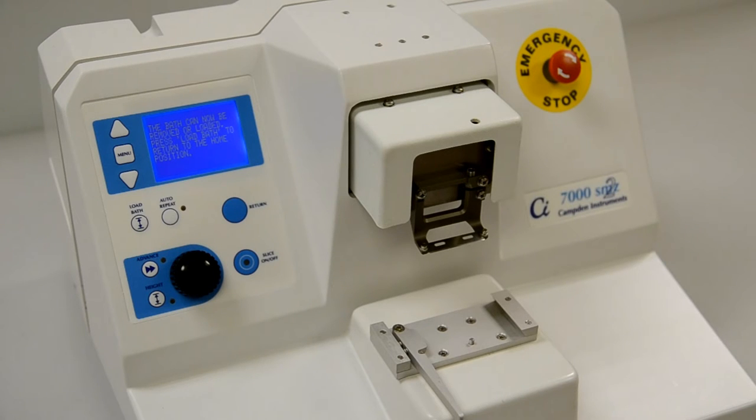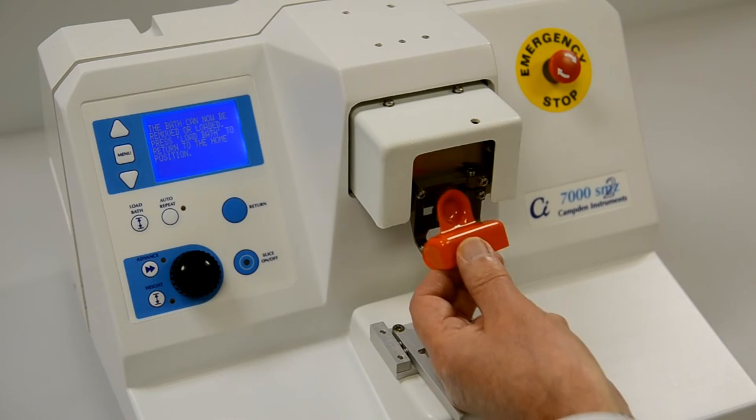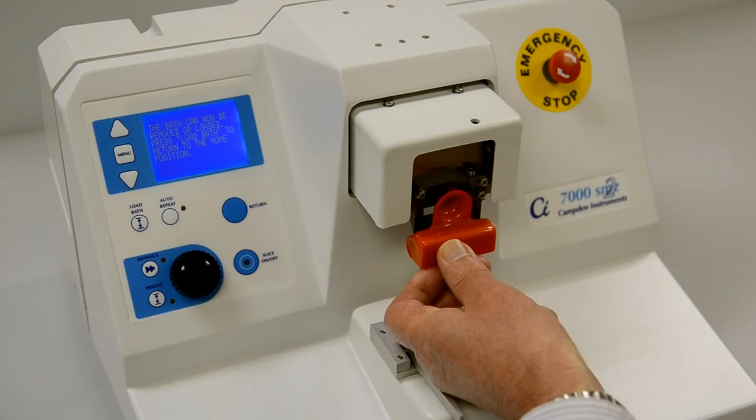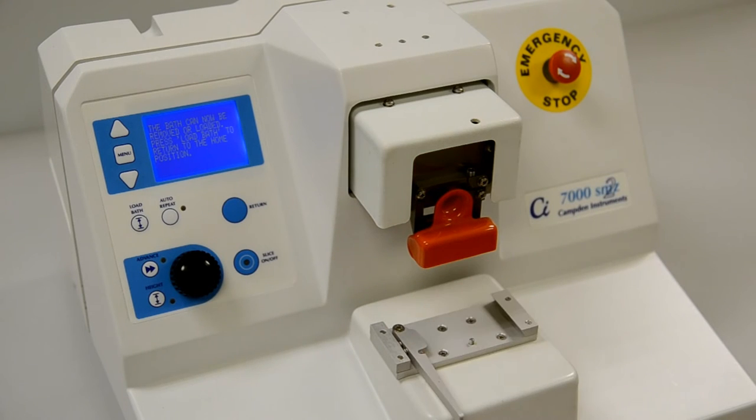Replacement screws, washers, and complete blade holders are all available from Camden Instruments. Consult your operator's manual for the correct part number. For operator safety, each instrument is supplied with a removable blade guard. This is easily fitted and removed as it is simply held in place with a magnet. Once it is in place, it will protect the operator from accidental cuts and also protect the blade edge from damage.